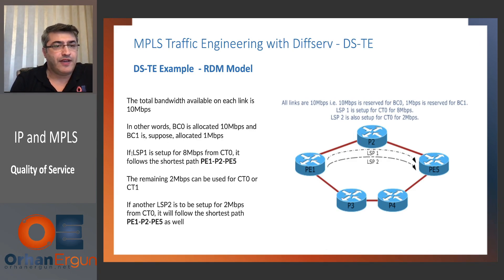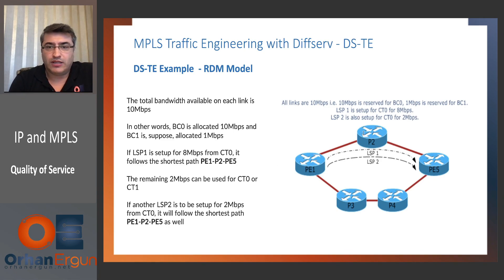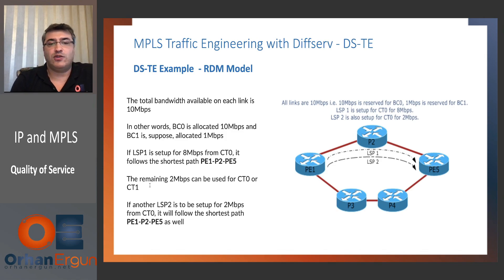LSP1 is set up for CT0 for 8 MB. Of course, 10 MB was there for BC0, so the shortest path can be used — LSP1 is set up on the top path. The total bandwidth available on each link is 10 MB; in other words, BC0 is allocated 10 MB and BC1 is allocated 1 MB. If LSP1 is set up for 8 MB from CT0, using the shortest path PE1, PE2, PE5, the remaining 2 MB can be used for CT0 or CT1.